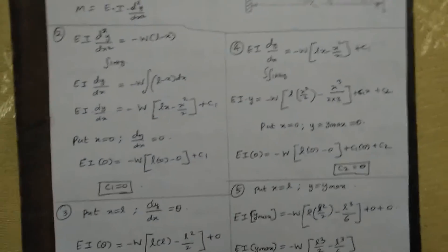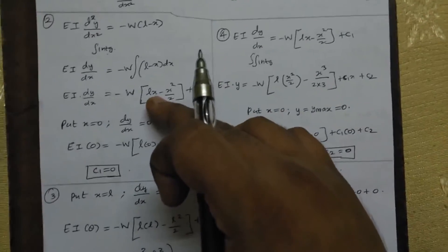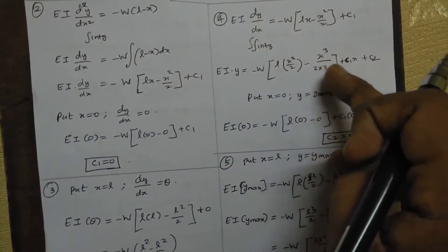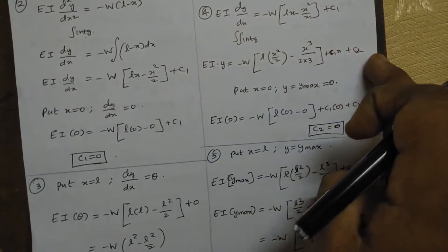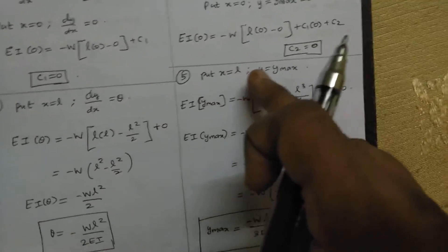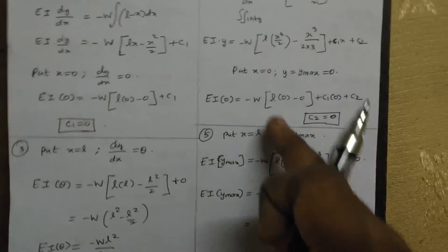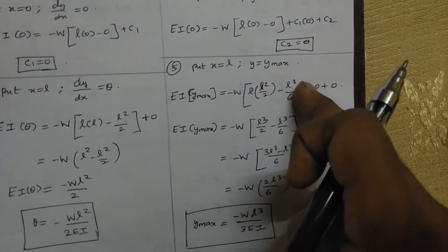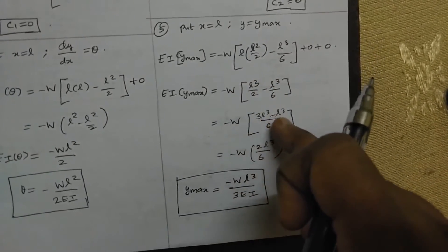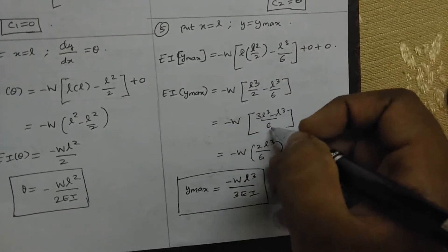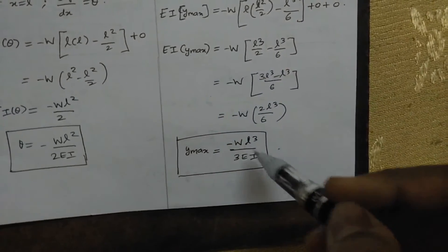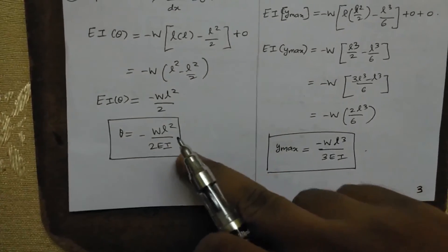Regarding the second integration: EI times y equals minus W times (Lx²/2 minus x³/6) plus C1x plus C2. Integrating Lx gives Lx²/2, integrating x² gives x³/3, giving x³/6. Put x equals 0, then C2 equals 0. Then put the value of x equal to L. Substituting L: L², L³/2, L³/6. This is how we got theta and y maximum.